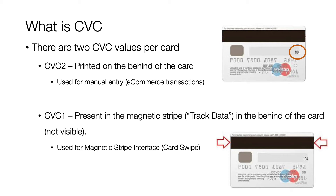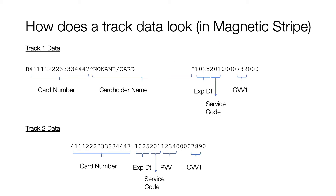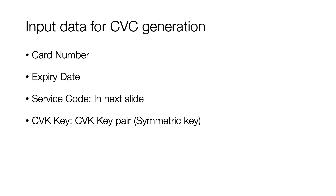Since we're talking about track data, I will briefly show how track data looks. There are two tracks on a given magnetic stripe. Track 1 contains the card number, cardholder name, expiry date, service code, and CVV1. Track 2 contains the card number, expiry date, service code, PVV, and CVC1.